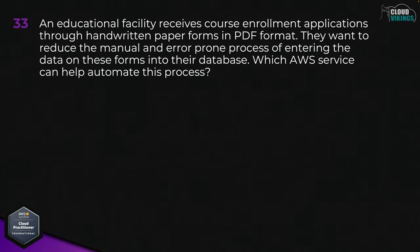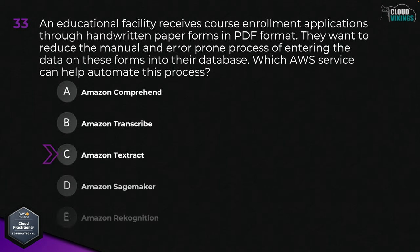Question thirty-three: an educational facility receives course enrollment applications through handwritten paper forms in PDF format. They want to reduce the manual and error-prone process of entering the data on these forms into their database. Which AWS service can help automate this process? Options are: A, Amazon Comprehend; B, Amazon Transcribe; C, Amazon Textract; D, Amazon SageMaker; or E, Amazon Rekognition. The correct answer is C, Amazon Textract.